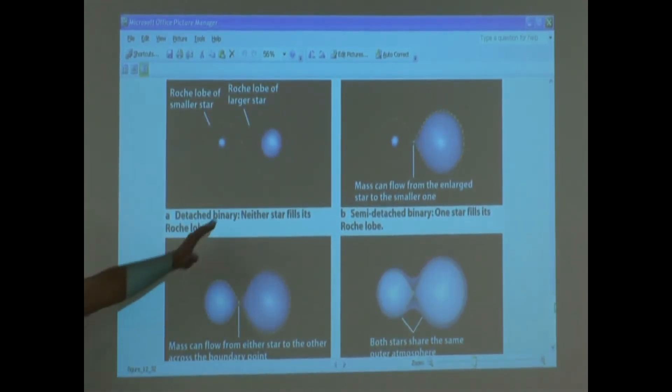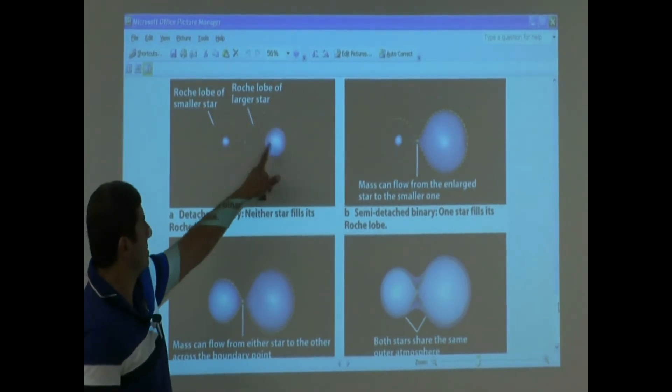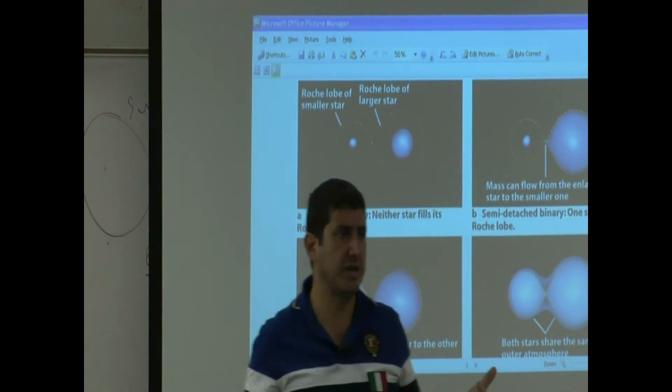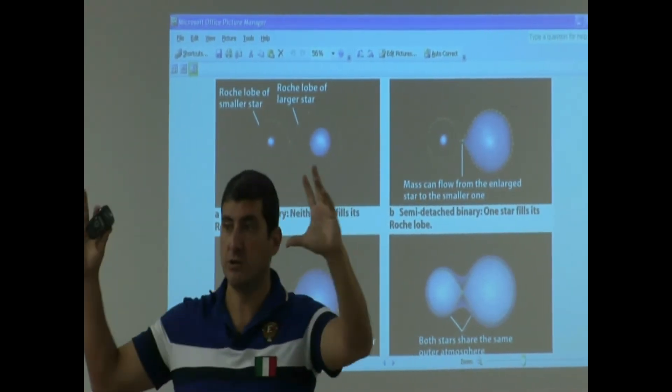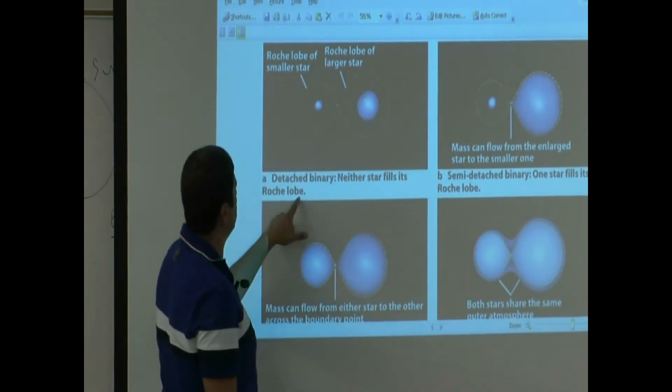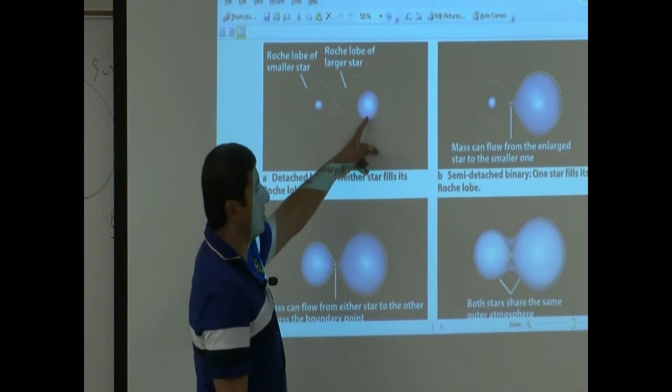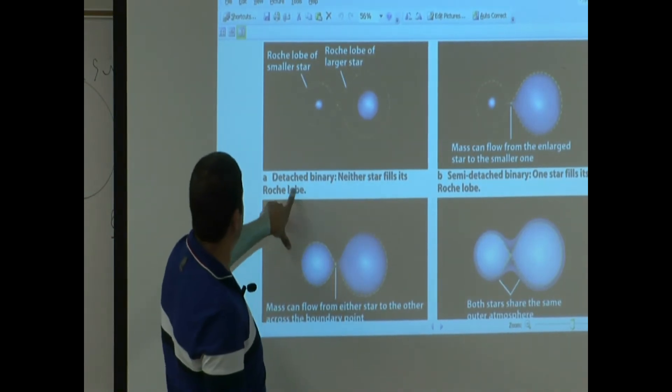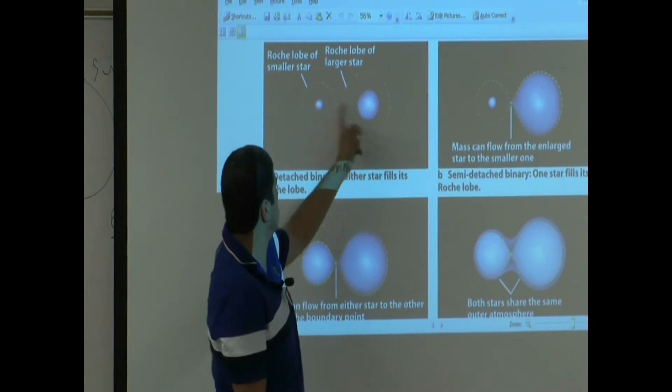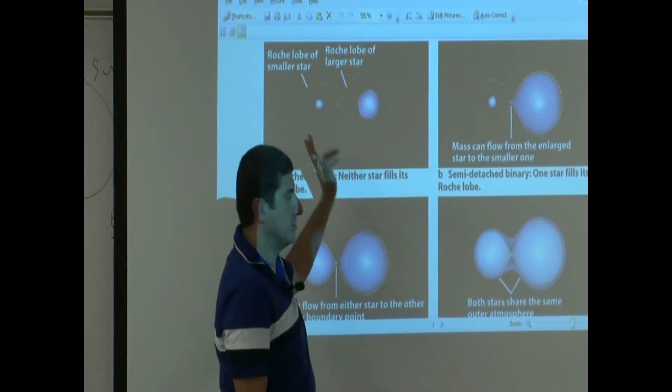We've seen a lot of binaries like this. They're going around each other. Neither one is feeding the other one. Why? Because neither one has really fully grown yet. So neither star fills its Roche lobe. They're still living stars. So this is called what kind of binary? Detached. Why? They're just detached. They're not feeding each other at all.